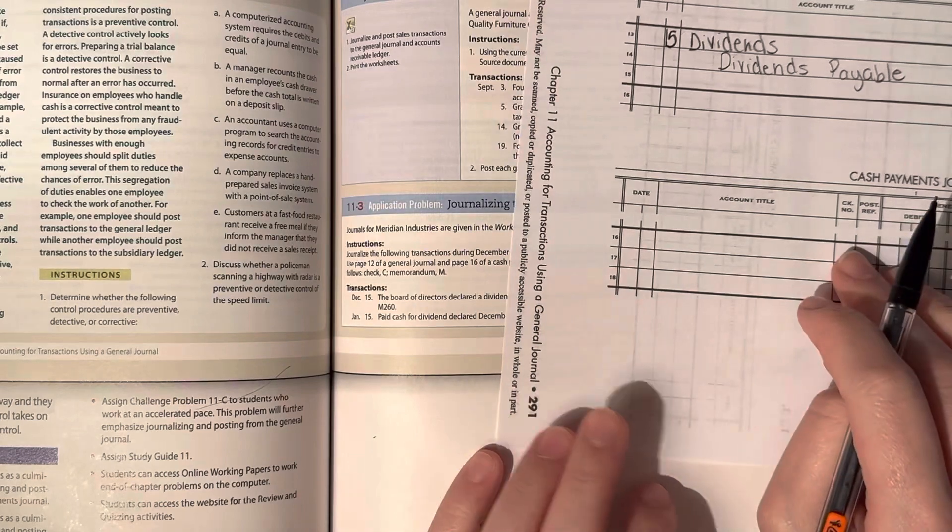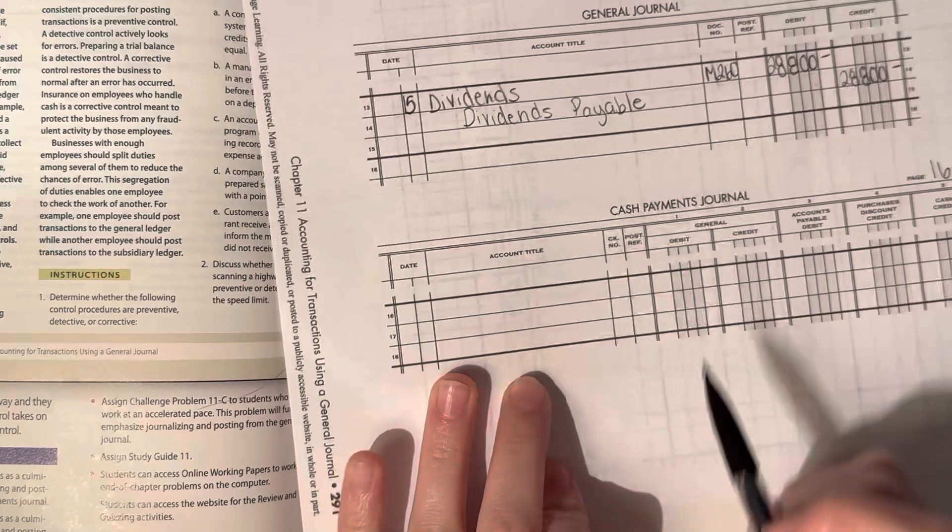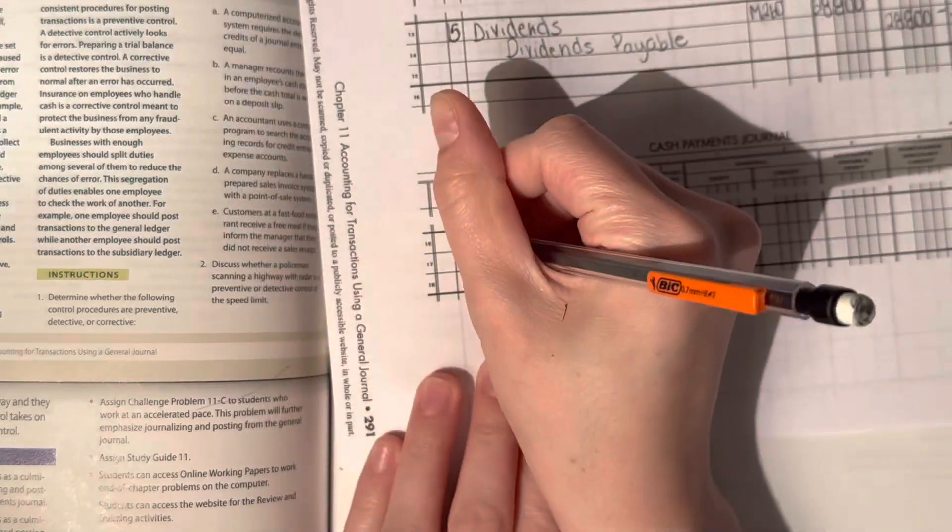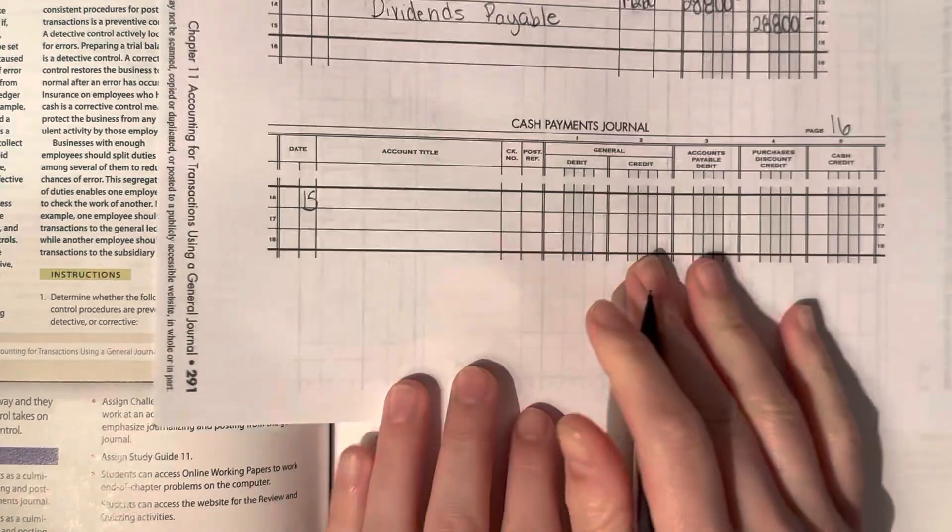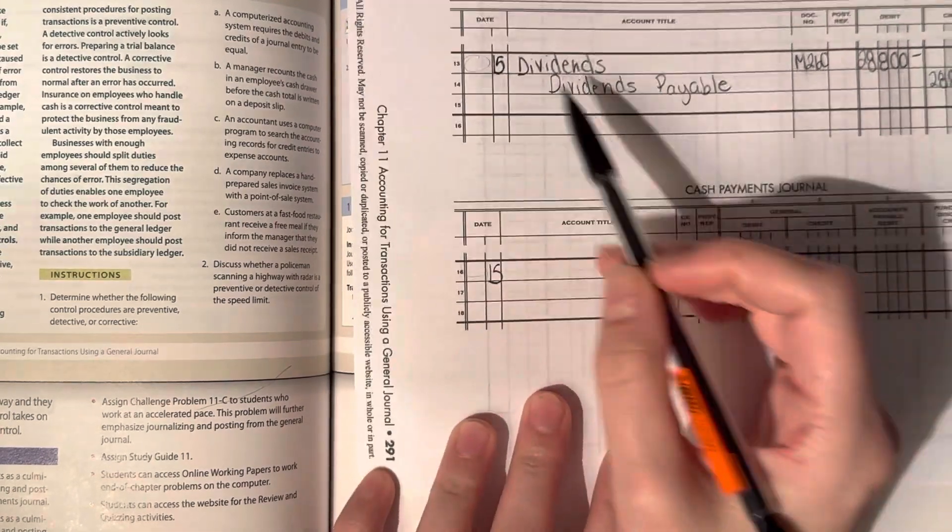Then on January 15th, we paid cash for dividends declared on December 15th. So this was January 15th now. You don't necessarily have to write the date. If you do, it's not that big of a deal.